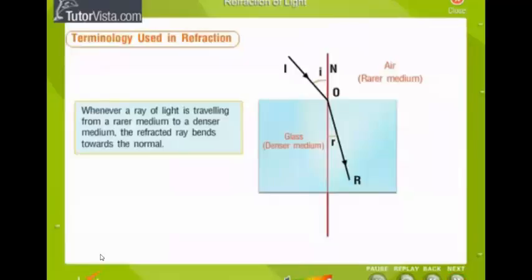Now, let's understand the phenomenon of refraction by studying the ray diagrams. Whenever a ray of light is traveling from a rarer medium to a denser medium, the refracted ray bends towards the normal. Here, IO is the incident ray, OR is the refracted ray, I is the angle of incidence, and R is the angle of refraction. In this case, angle I greater than angle R.